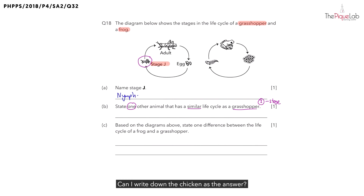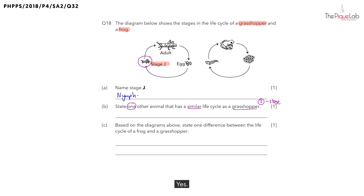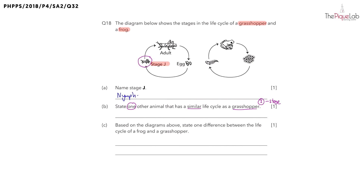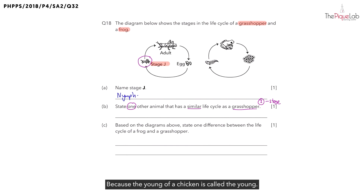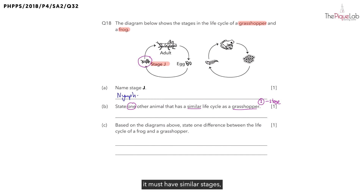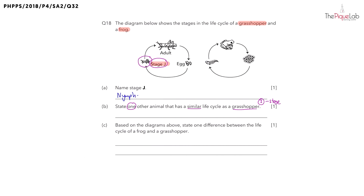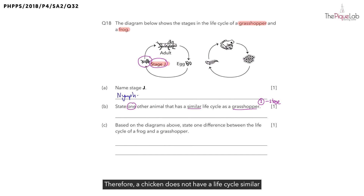Now, what about the chicken? Can I write down the chicken as the answer? Does the chicken have a three-stage life cycle? Yes. Does the young of the chicken also resemble the adult? Also yes. So am I able to write down chicken as the answer? The answer is no. Because for this animal to have a similar life cycle as the grasshopper, it must have similar stages. The young of the grasshopper is called the nymph stage, and the nymph undergoes molting, while the young of a chicken does not. Therefore, a chicken does not have a life cycle similar to that of a grasshopper.